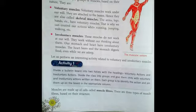Let us perform an interesting activity related to voluntary and involuntary muscles. Divide a bulletin board into two halves with the headings: one side voluntary actions and the other side involuntary actions. Divide the class into groups and give them chits with voluntary and involuntary actions written on them. Each group must identify the action and pin it on the board in the appropriate column. Since we are not having regular classes, you can do this activity at home.